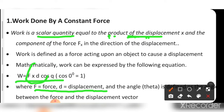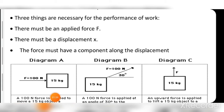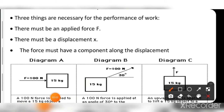There are three things necessary for the performance of work: first, there must be an applied force; second, there must be displacement; and third, the force must have a component along the displacement. The product of force and displacement is known as work done.